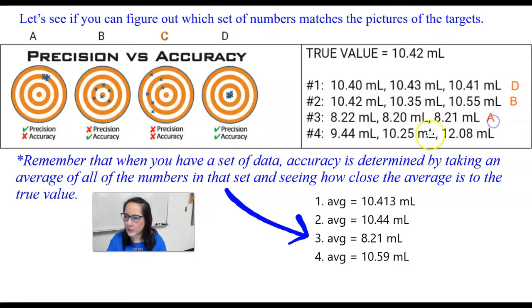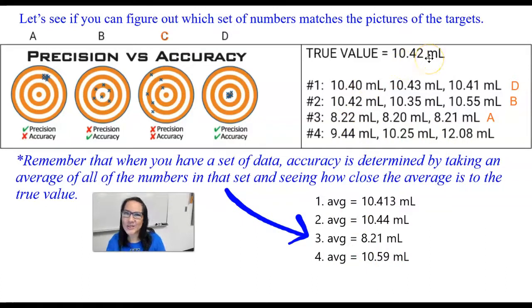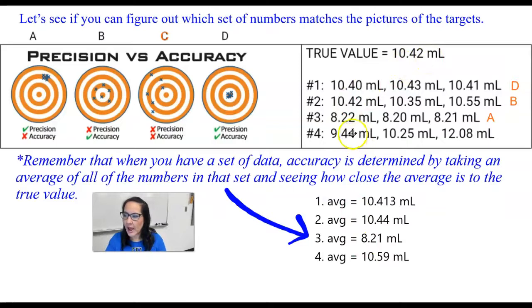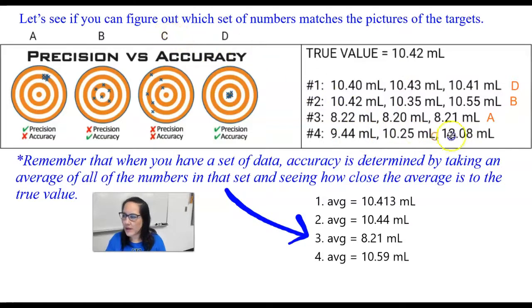And then the last one — the average is 10.59 milliliters, which is not very close to the true value, so that's not accurate. And the measurements are very different from each other, so they're also not precise. That's letter C.